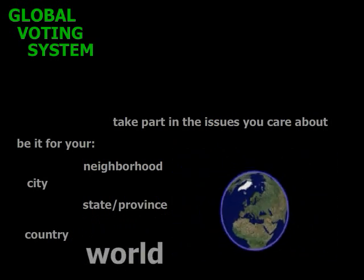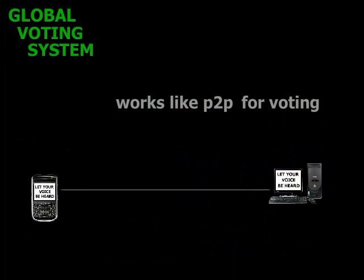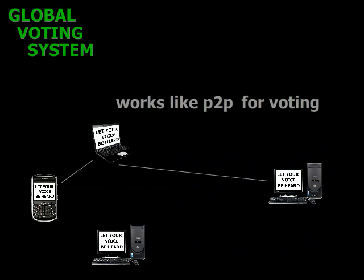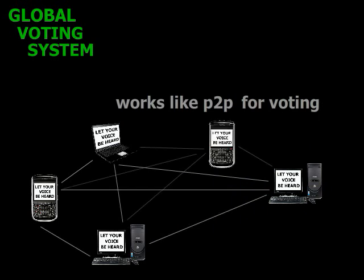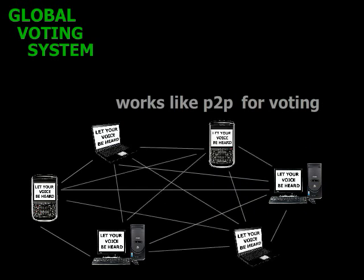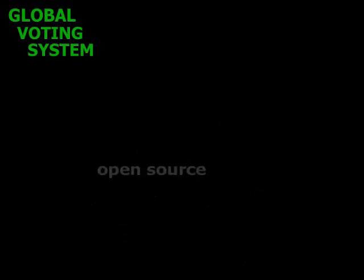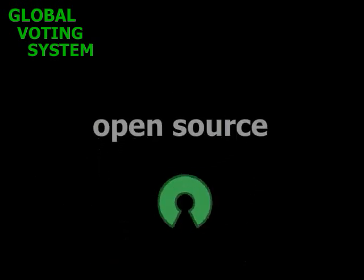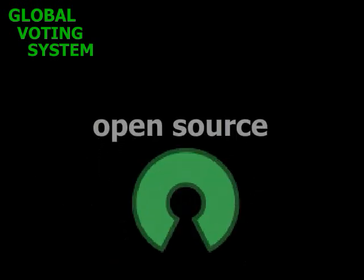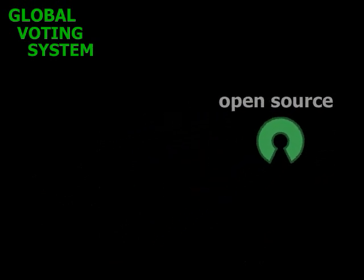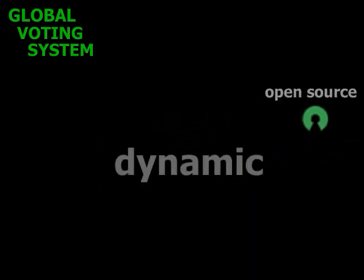Working in a similar fashion to person-to-person file sharing, the Global Voting System will use a decentralized network to share information, with a protocol defining how to transfer voting data between users. It will be open source to ensure transparency and to allow for collaboration on design.